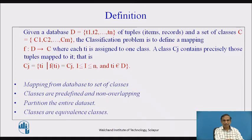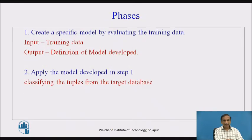Classes are predefined and non-overlapping. Each is unique, and together they form a partitioning of the entire dataset. Classes are equivalent classes, and there are different phases to create these classes.